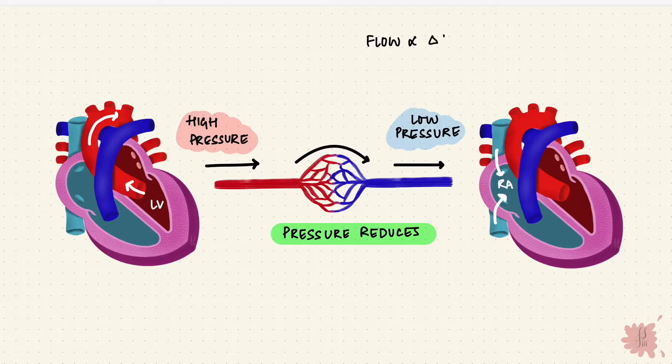So flow is proportional to the pressure difference. But what opposes it? Resistance. Resistance is literally responsible for resisting flow. So it's inversely proportional. And flow is the change in pressure over resistance.